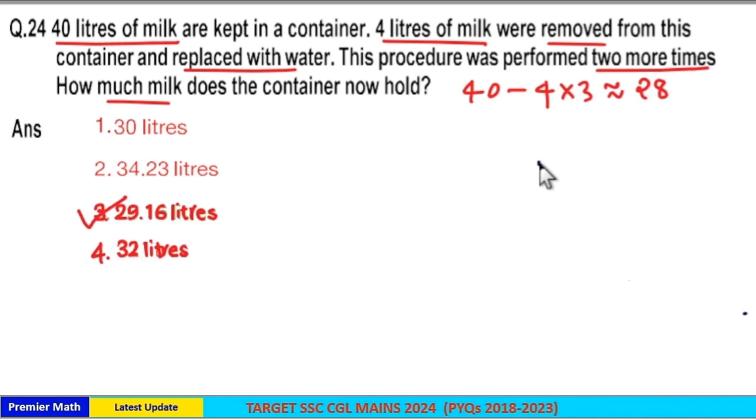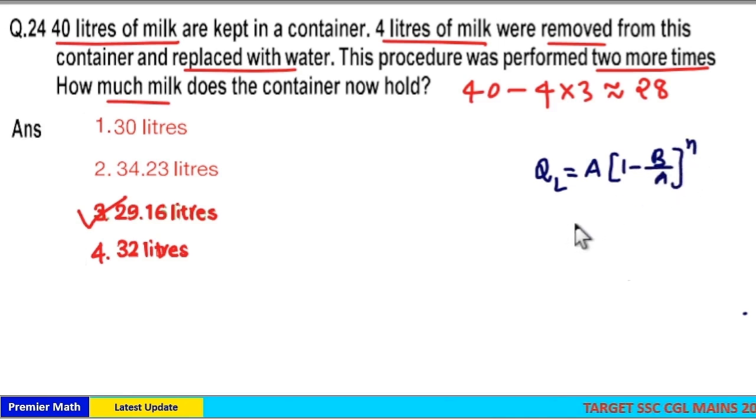can use formula method or ratio method. Formula method means A times (1 minus B/A) raised to n. That is, initial quantity of milk present was 40, out of this 4 liters milk taken out of this 40.